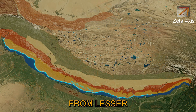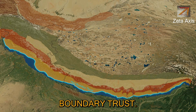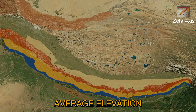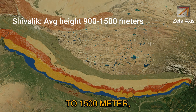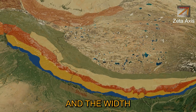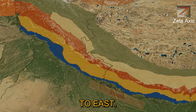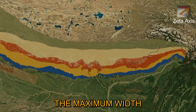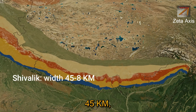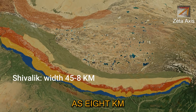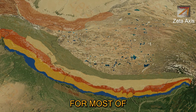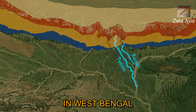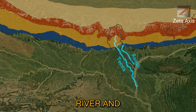Siwaliks are separated from Lesser Himalayas by the Main Boundary Thrust. Siwaliks extend from Jammu in the west to Assam in the east, with an average elevation of about 900 to 1500 meters. The width of the Siwaliks varies from west to east — wider in the west and very narrow in the east. The maximum width is 45 km while the minimum is as little as 8 km. For most of its extent, Siwaliks are continuous mountains except for an 80 to 90 km gap in West Bengal between the Teesta river and the Raidak river.